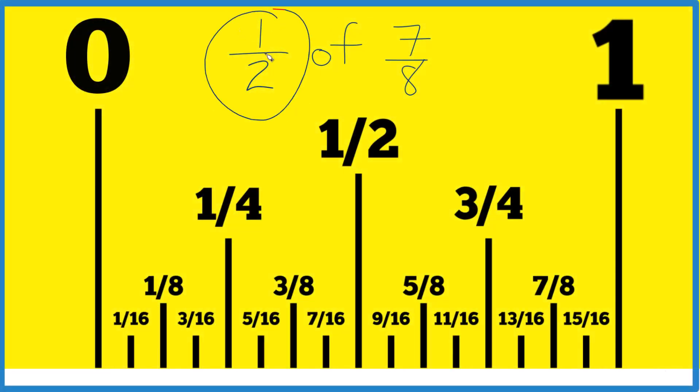Let's find one half of seven eighths here on our ruler or tape measure. If we look at our ruler, we have one half, cut that in half you get one fourth, cut that in half you get one eighth. So right here is one eighth, and seven eighths, that's eight of these things right here.